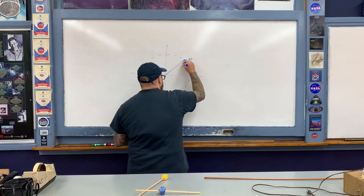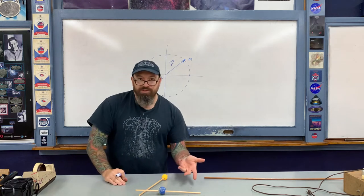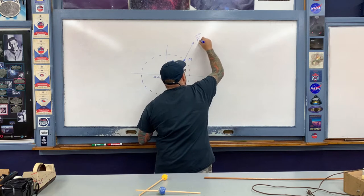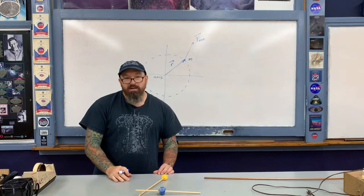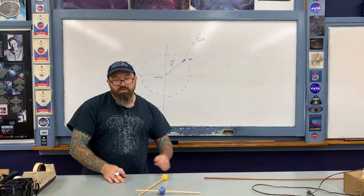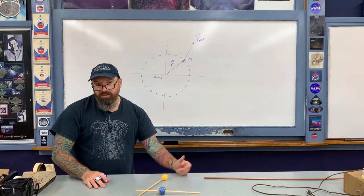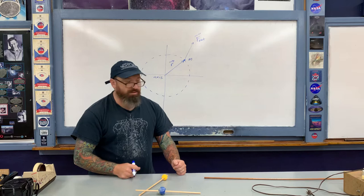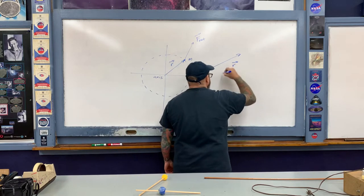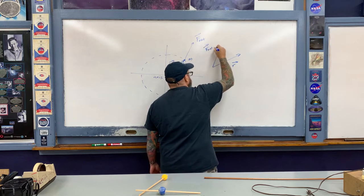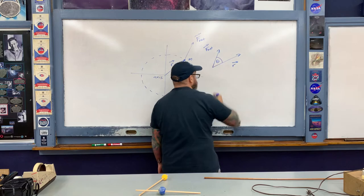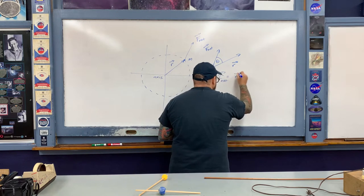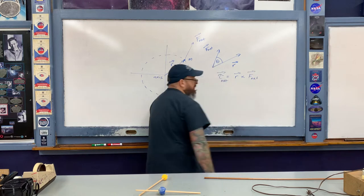The net force vector is applied to mass m. Now let's describe the net torque exerted upon mass m using the cross product. Here is the moment arm r and here is the net force vector; there is an angle theta formed between those two vectors. So the net torque — tau net — is equal to the cross product between the moment arm and the net force vector.